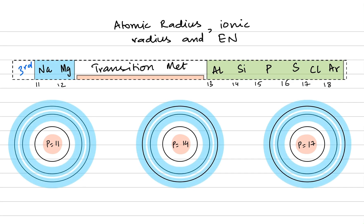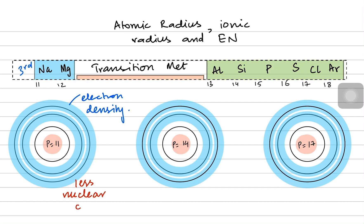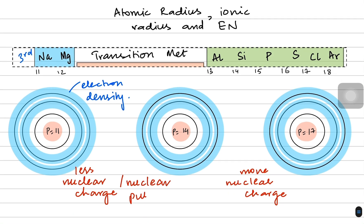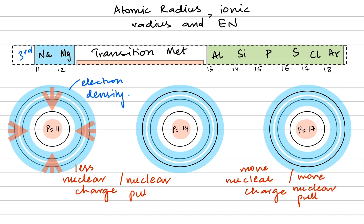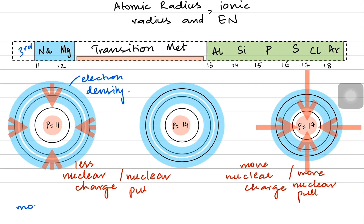We know that electron shells are not fixed radii but are electron densities. The blue region represents where the electrons could be found, or you can see the orbitals. With less proton number there is less nuclear charge, and with more protons there is a higher nuclear charge. Less nuclear charge won't be able to pull the electrons towards itself, but with more protons there is more nuclear pull on the electrons and their shells.